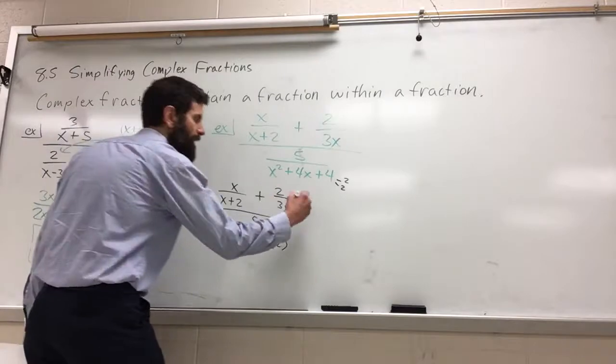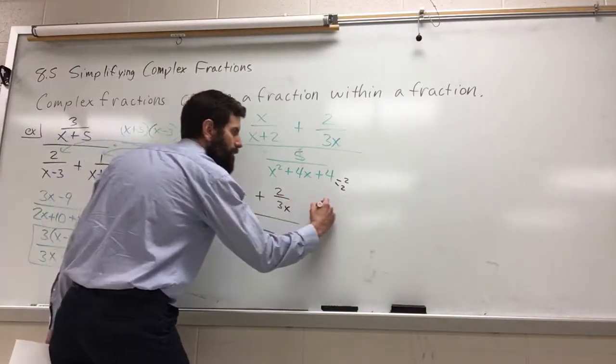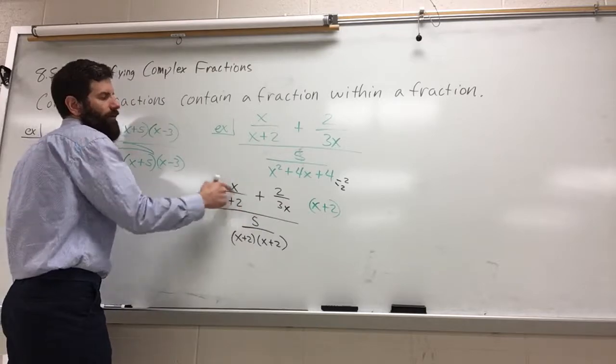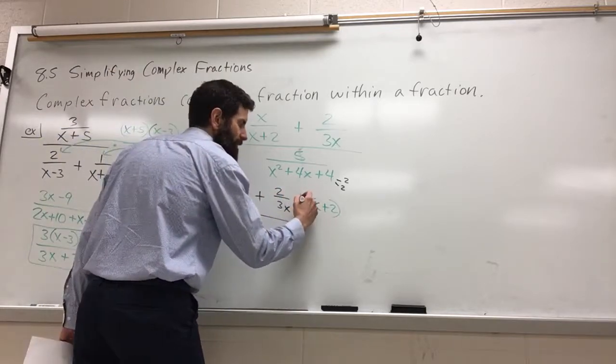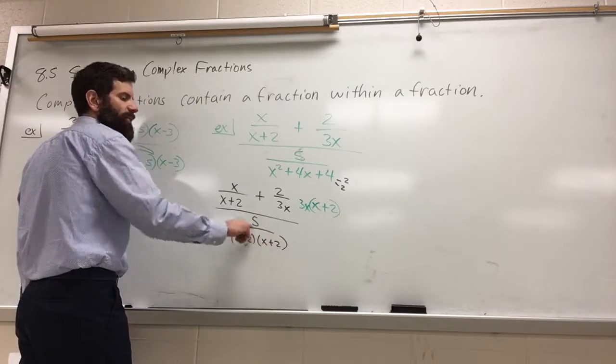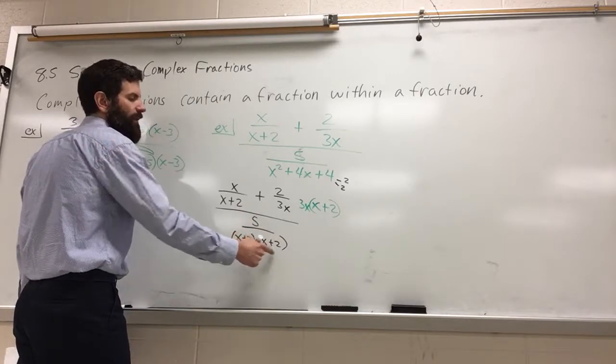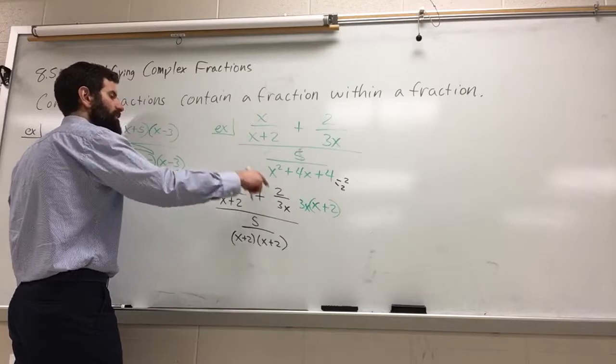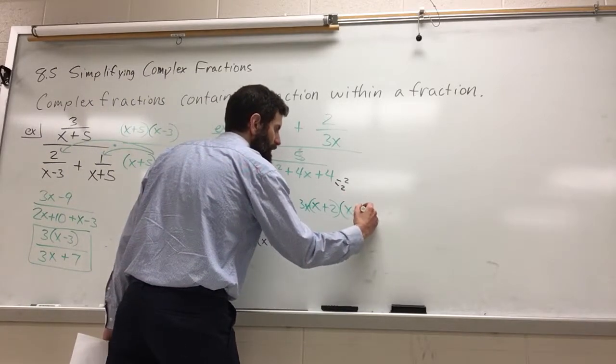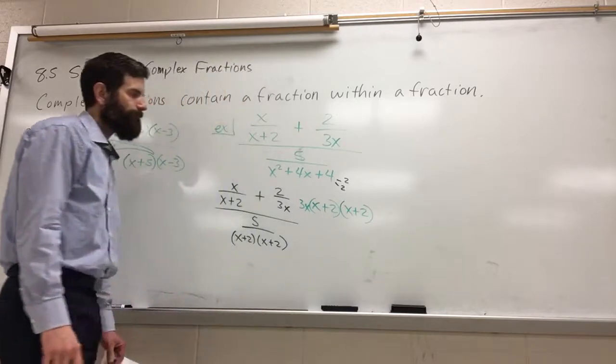Because if a single denominator has multiples of something, we're going to have to have multiples of that something. So we need an x plus 2, we definitely need one of those as a factor. We need a 3x. But because this single fraction here has 2 of them, our common denominator of everything has to have 2 of them.